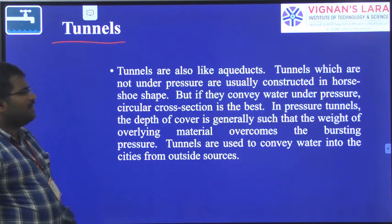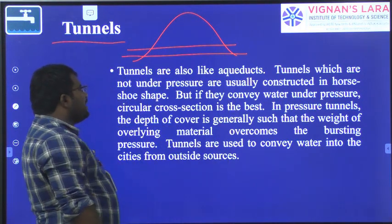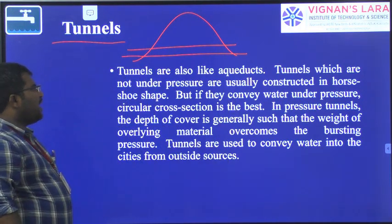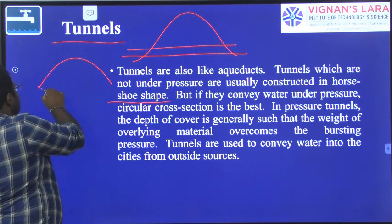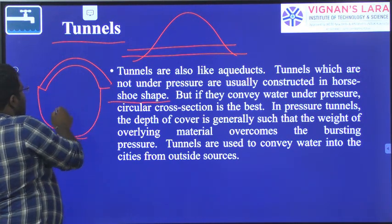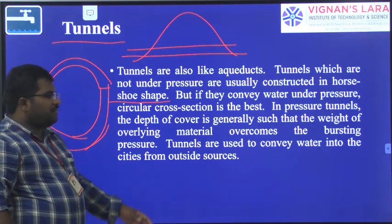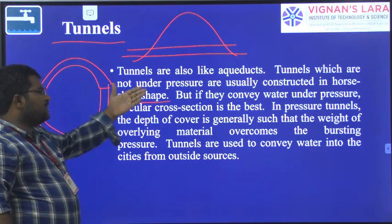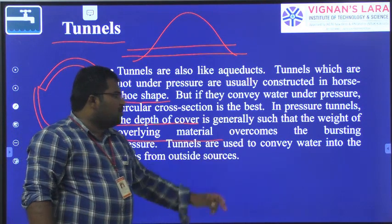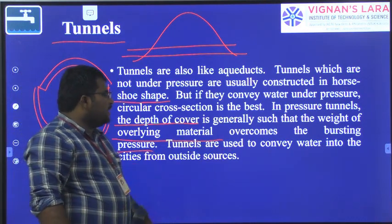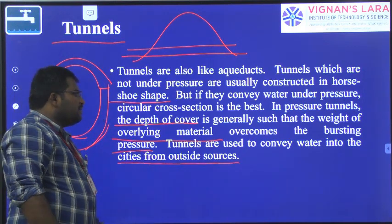Tunnels are constructed when you have a hill to pass through. Tunnels that are not under pressure are normally constructed in a horseshoe shape. If they convey water under pressure, a circular cross-section is best. In pressure tunnels, the depth of cover is generally such that the weight of overlaying material overcomes the bursting pressure. Tunnels are used to convey water into cities from outside sources.